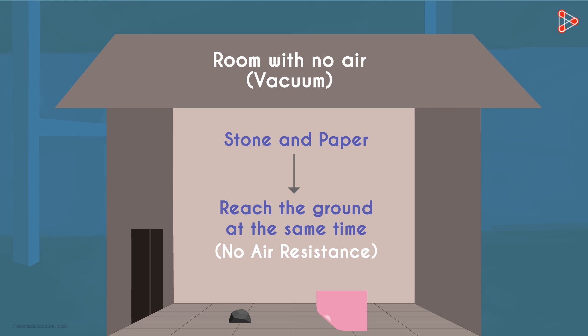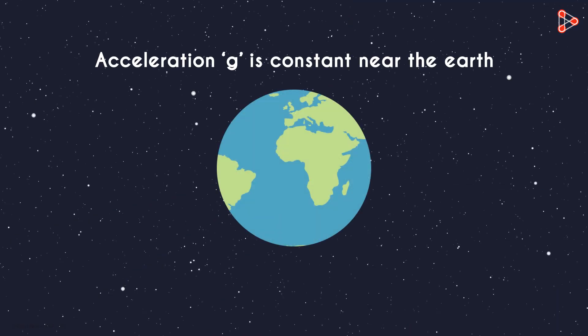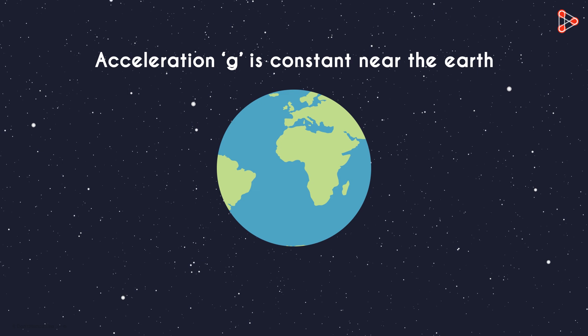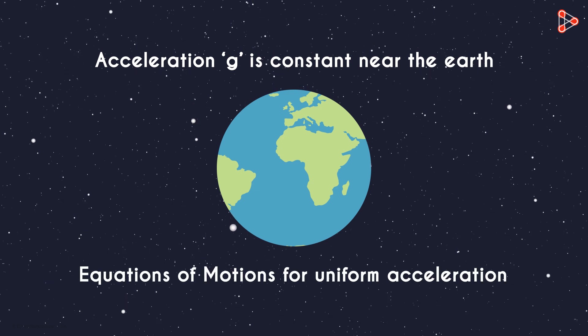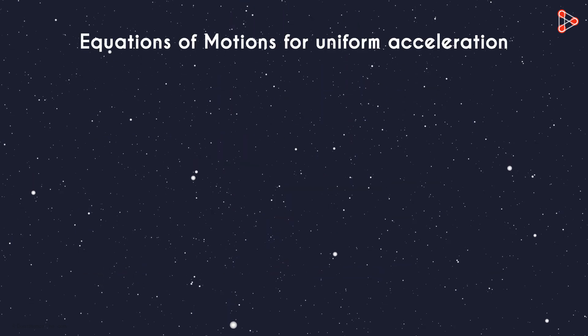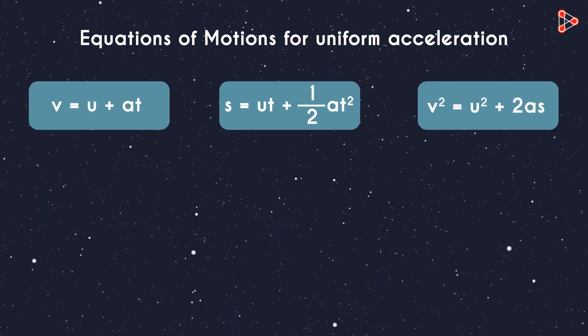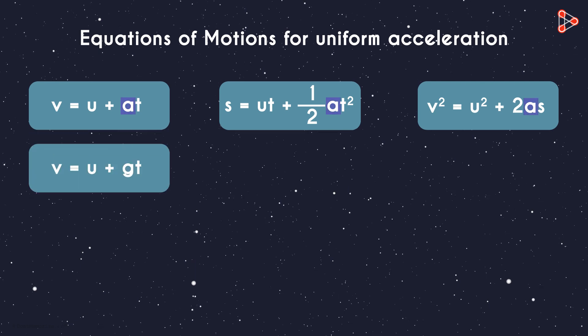So this was an important concept we learned. Another thing we know is the acceleration g is constant near the earth. So this means that all the equations of motion we'd seen for uniform acceleration will be valid here. Do you remember the three equations of motion? Here they are.